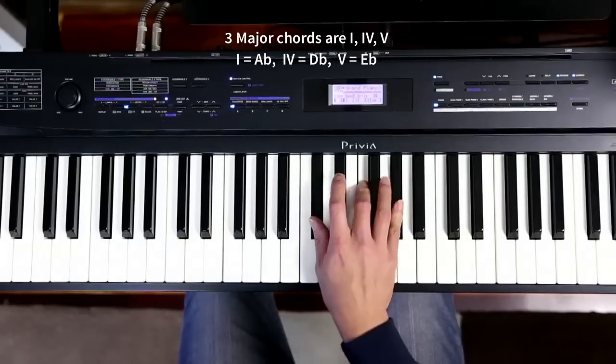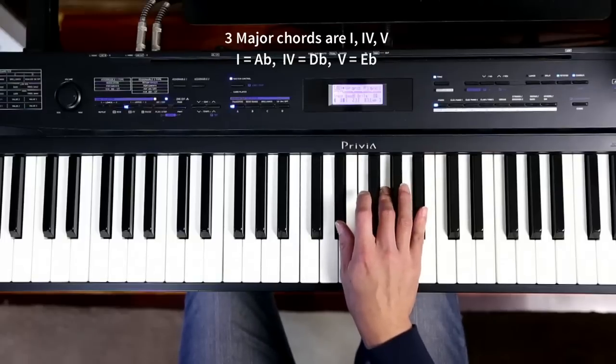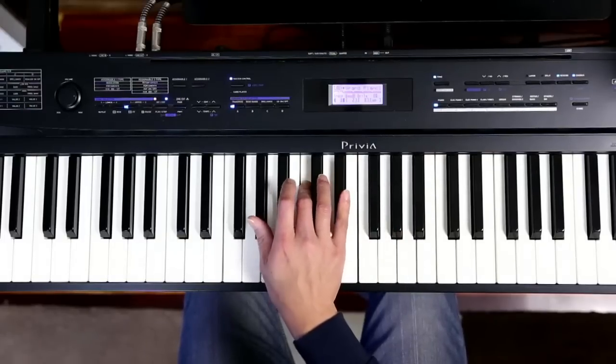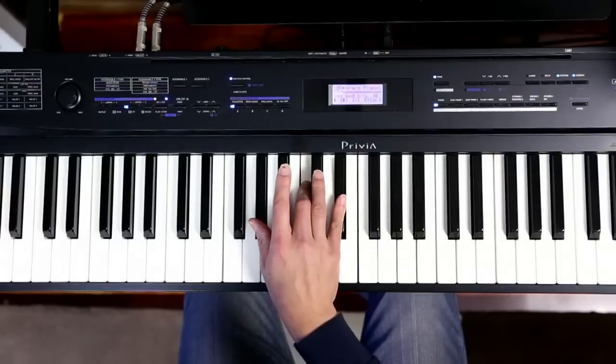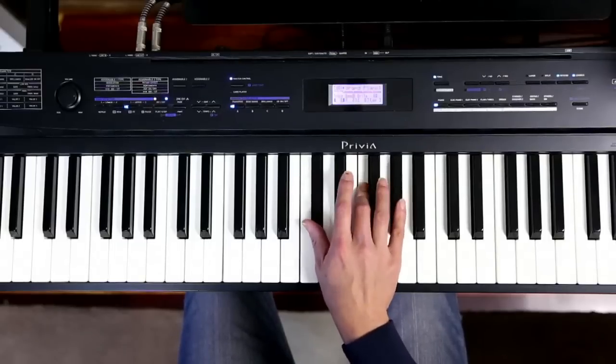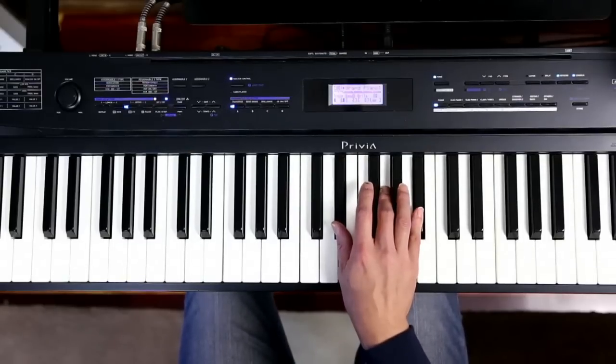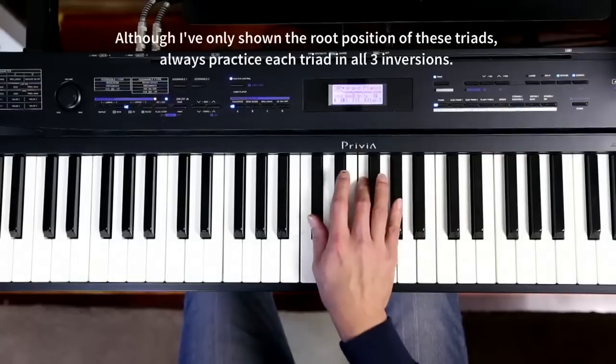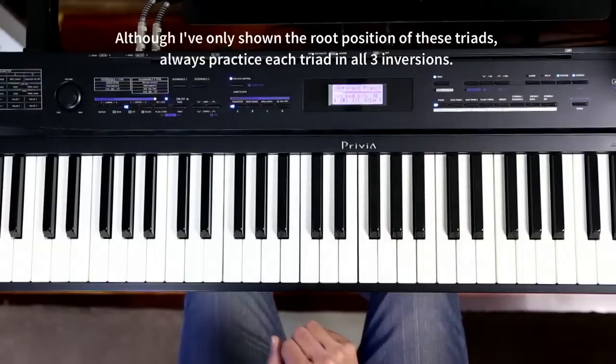Here's your A flat triad, D flat triad, and E flat triad. One thing to notice is that they look very similar. They've got two black notes on either side, white note in the middle. D flat chord, two black notes on either side, one white note in the middle. And same thing for E flat. Okay, so they're quite easy to learn if you learn them as a group in the key.